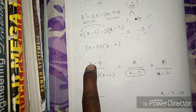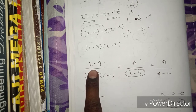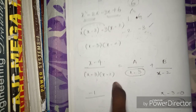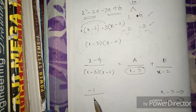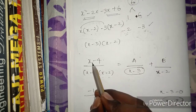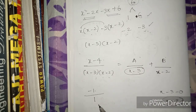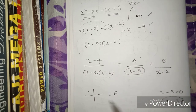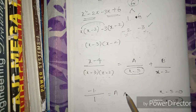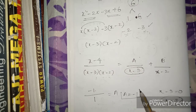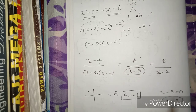So: (3 - 4) / (3 - 2) = -1 / 1. That is equal to A. So A = -1.